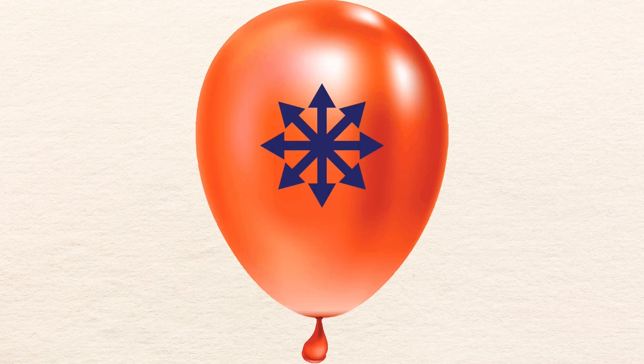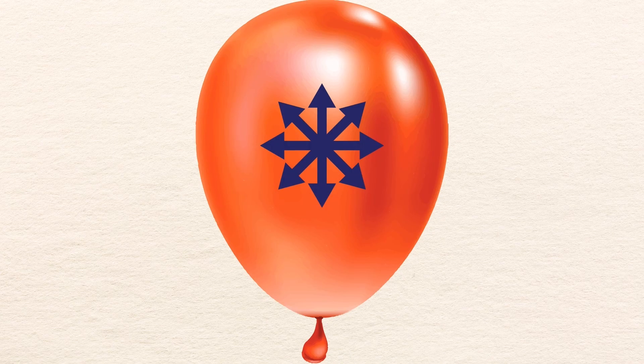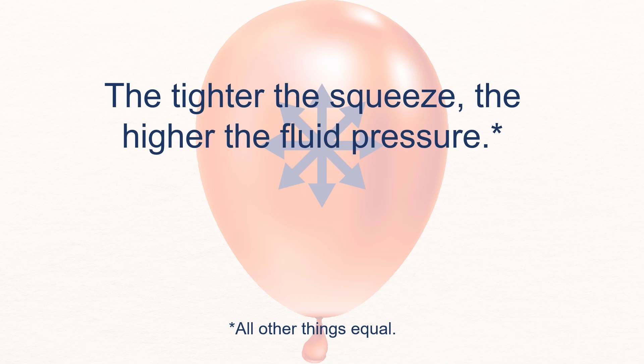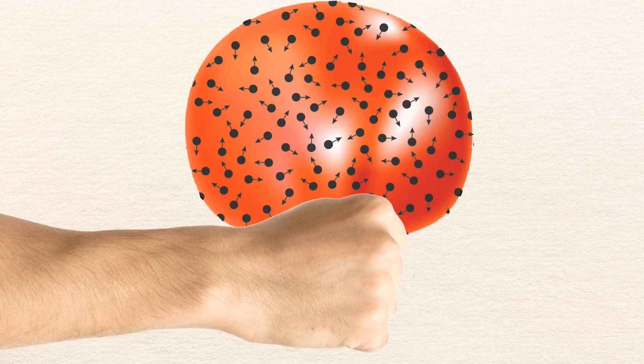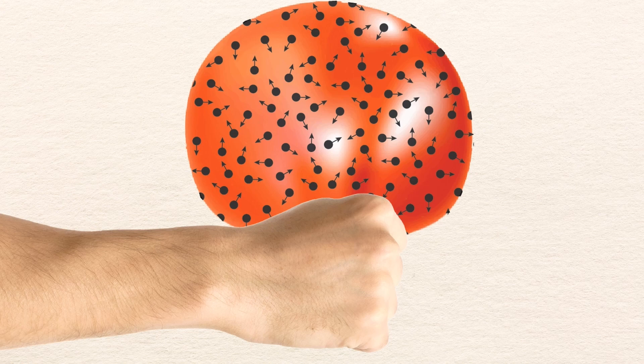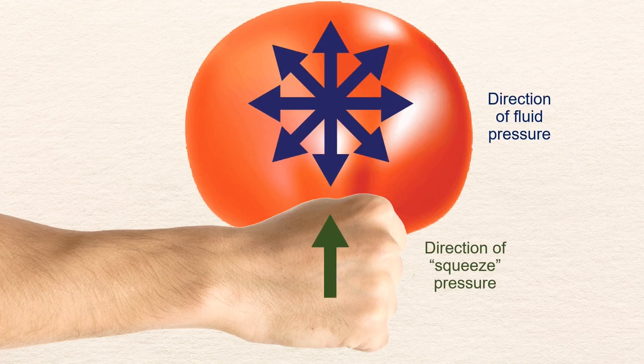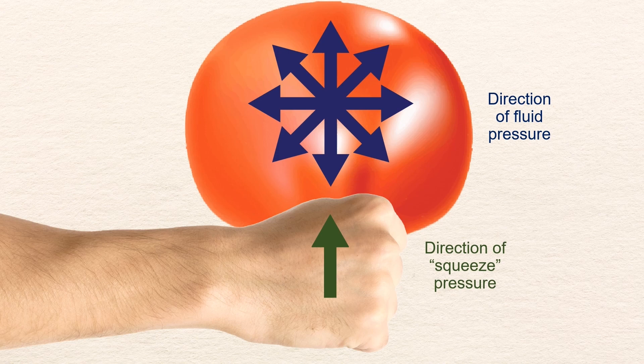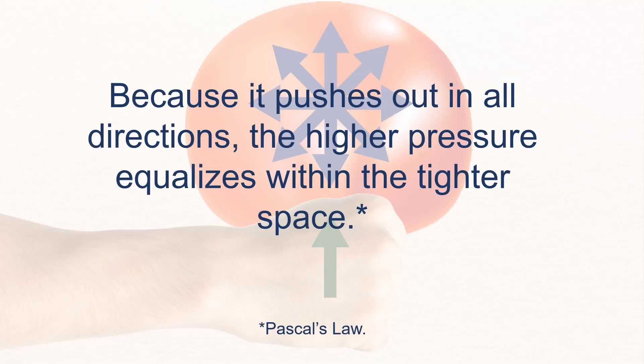From now on, we'll represent it with these arrows pointing in all directions. Moreover, the tighter you squeeze a fluid, the stronger the pushback against your squeeze. That's because when you force the molecules closer together, they bounce off one another more often and with greater force. You can tell that the increased fluid pressure is pushing out in all directions by the way the balloon bulges to the sides as you squeeze it. This pushing outward also means that the pressure equalizes within the balloon. This principle is known as Pascal's Law.